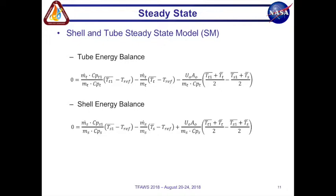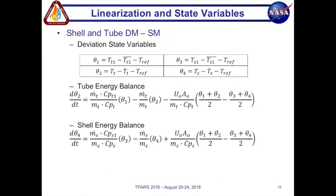And using a normalization process we can subtract our steady state model or we will subtract our dynamic model from our steady state to get a normalized model. And from this we can get our deviation state variables as you can see.